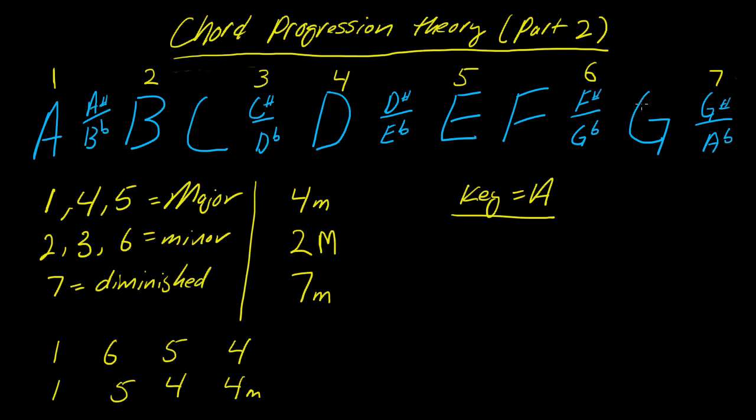So one through seven. In the key of A, for example, if you were to run into a four m, all you would have to do is see what four lands on, which is a D. And instead of being a D major, which four chords are by default, it would be a D minor.